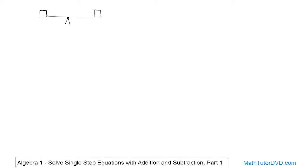Now, if the distance from here to the center is the same on both sides — in other words, if the thing is balanced — and if you put a box on one side and a person of the same weight on the other side, that seesaw is going to remain balanced.